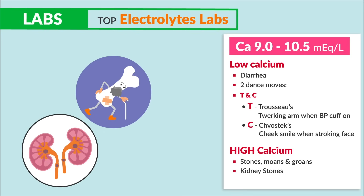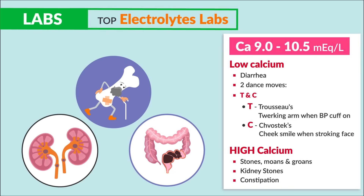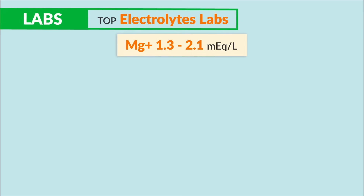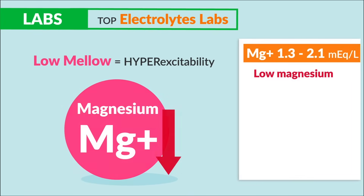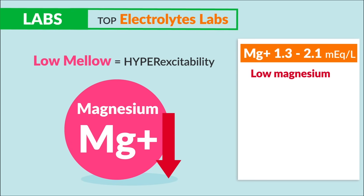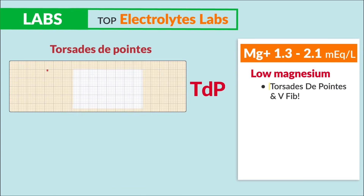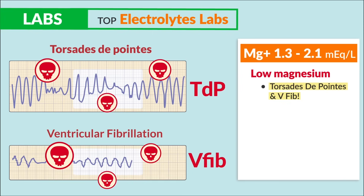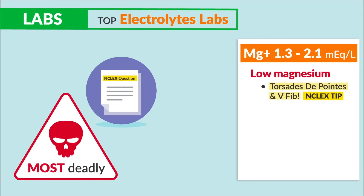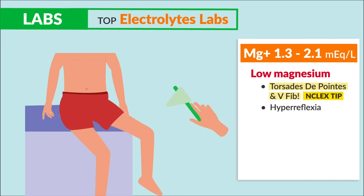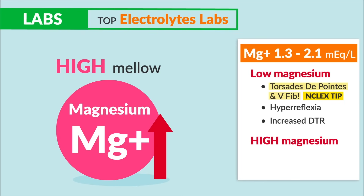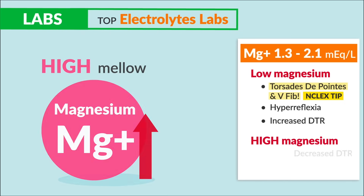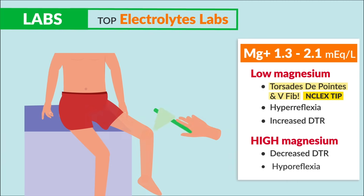Magnesium normal range is 1.3 to 2.1. Think double M's: magnesium mellows out the muscles. Low magnesium means low mellow — hyper excitability — with two deadly cardiac dysrhythmias: torsades de pointes and V-fib. Also hyperreflexia and increased DTRs (deep tendon reflexes). High magnesium gives high mellow: decreased DTRs and hyporeflexia.